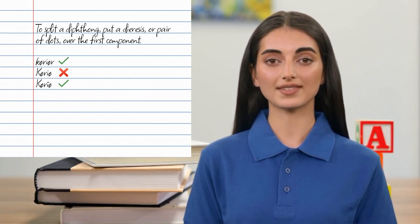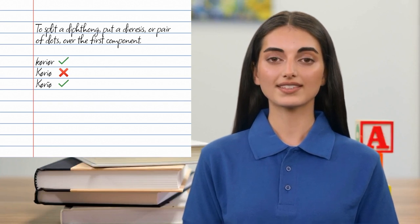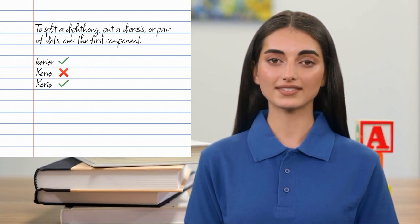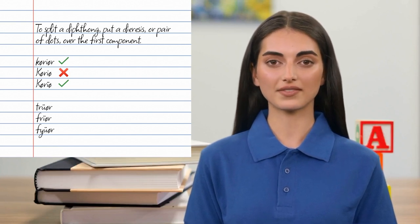Korea is two syllables, with a diphthong in the second one. Korea is three syllables, none of which contain a diphthong. Other examples include: truer, freer, fewer.